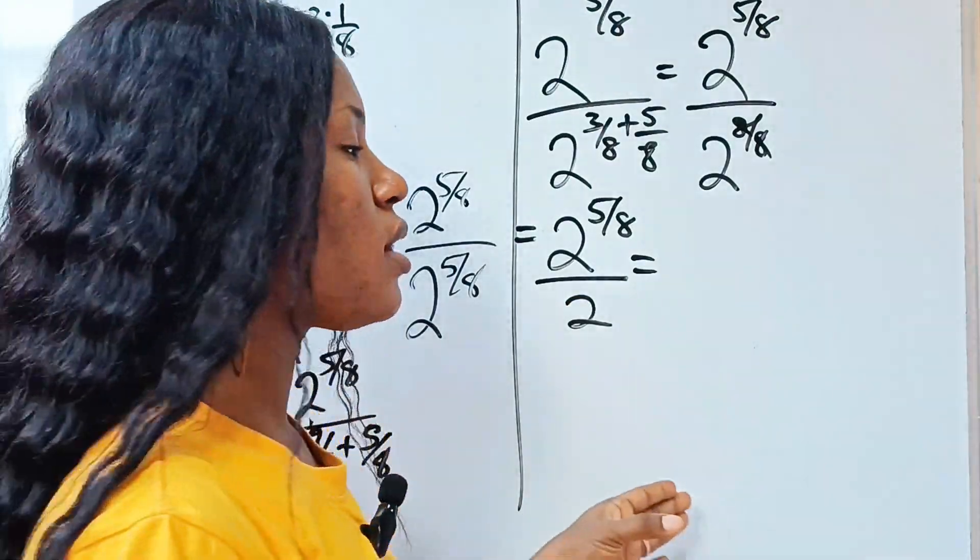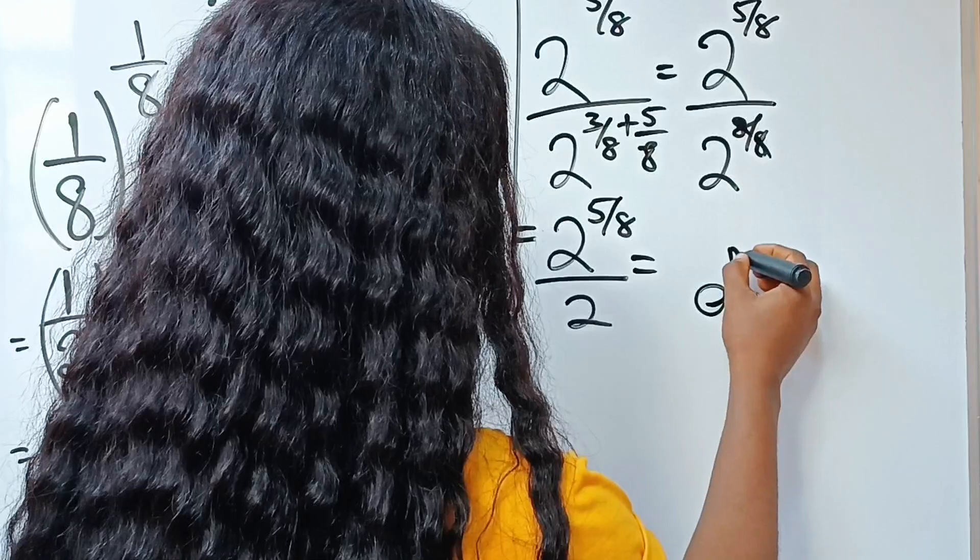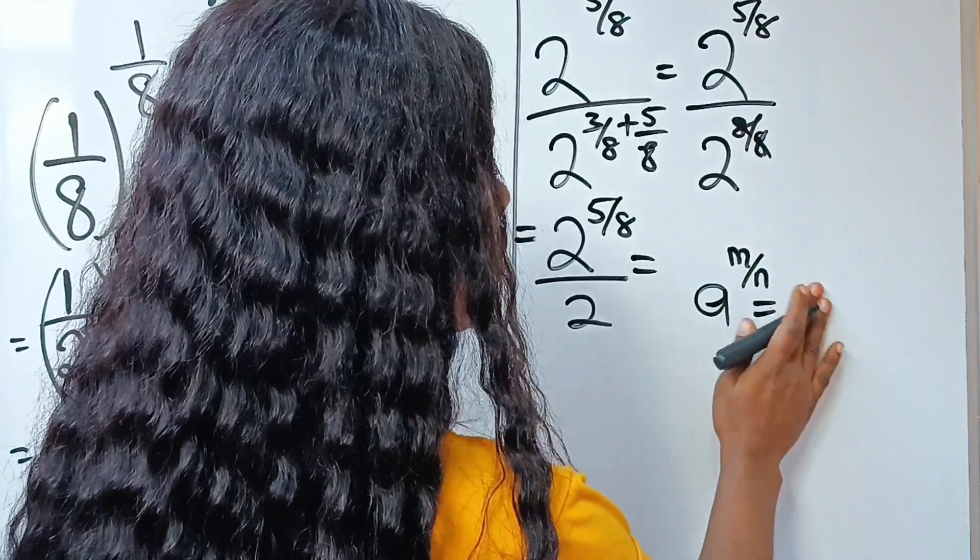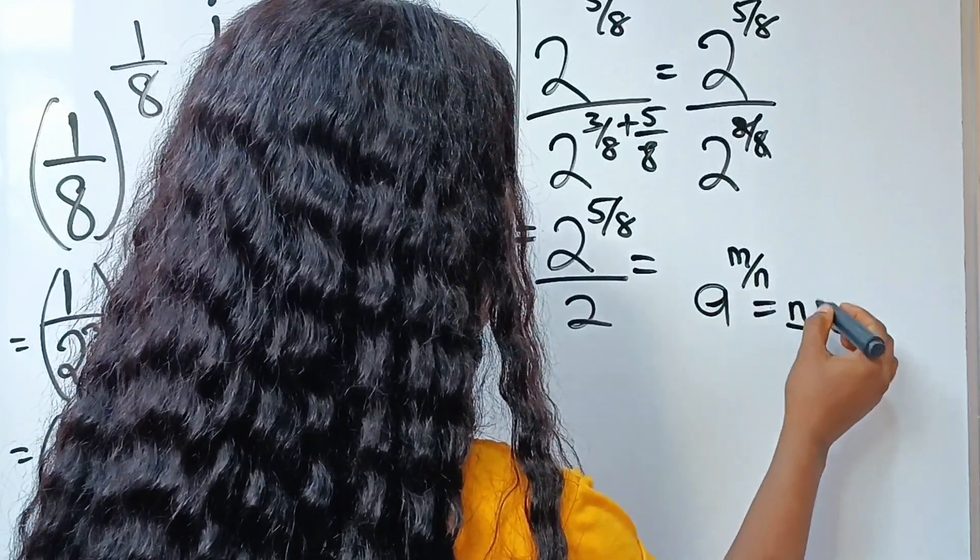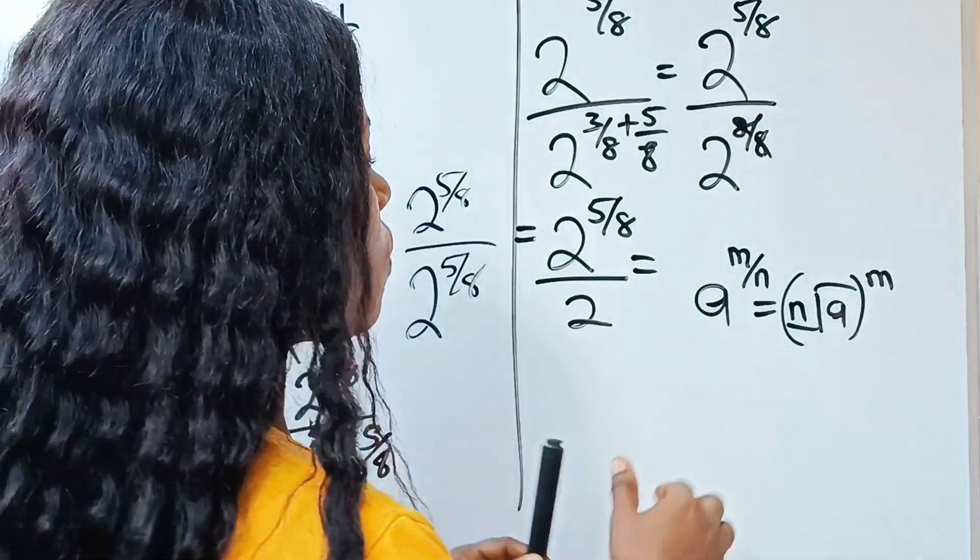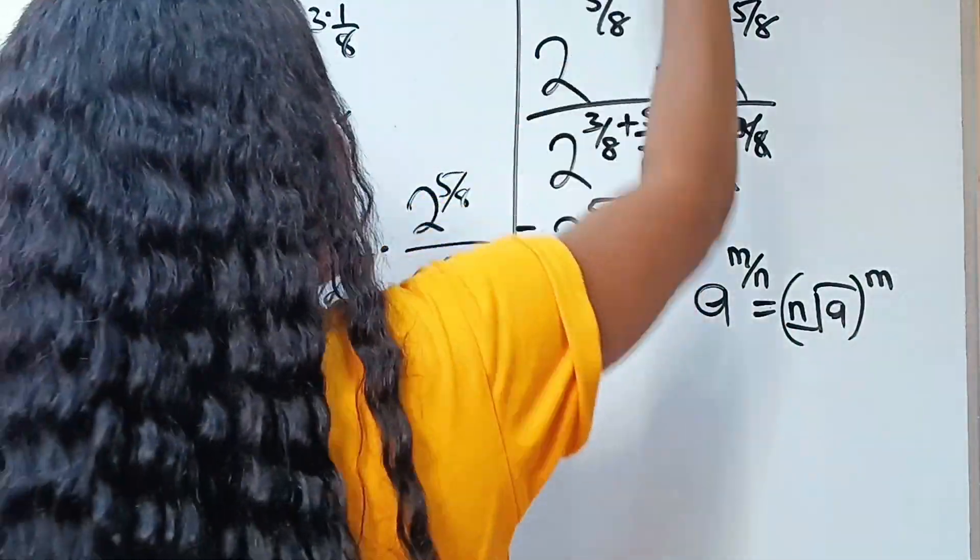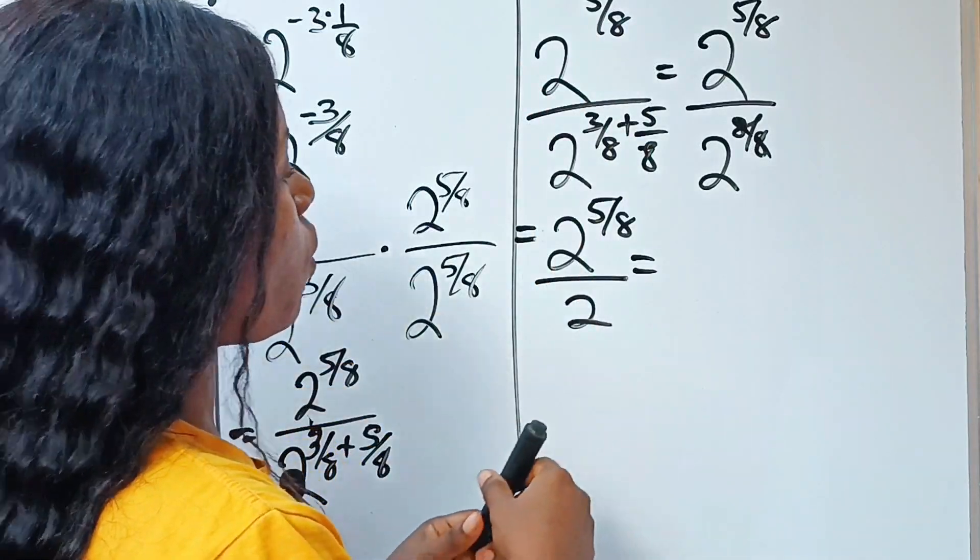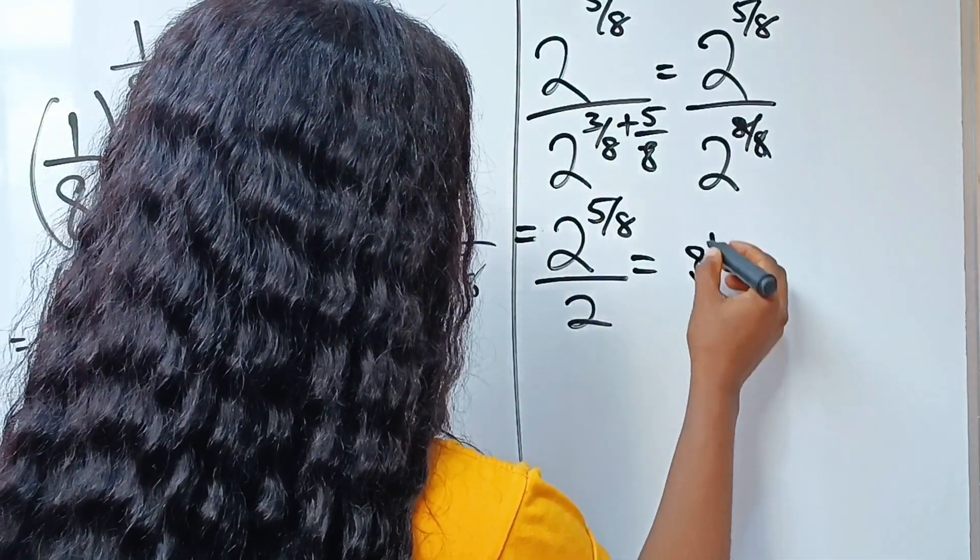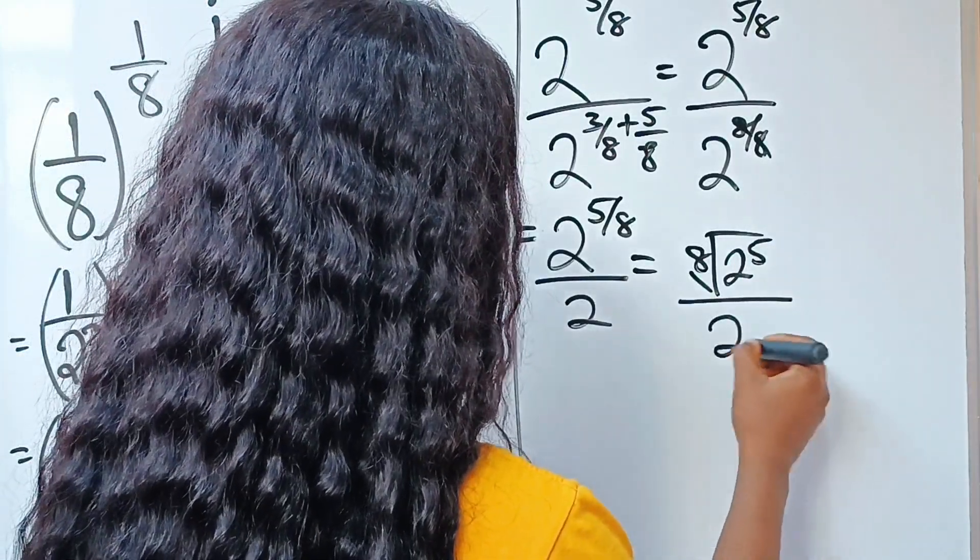In exponents or indices, the law states that A raised to the power of M over N is equal to the N root of A raised to the power of M. So we are going to do the same thing to this particular expression. This is equal to the 8 root of 2 to the power of 5, divided by 2.